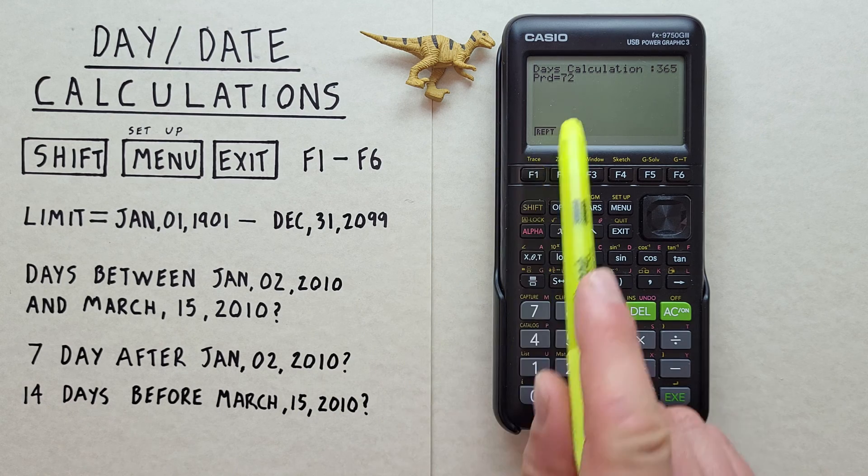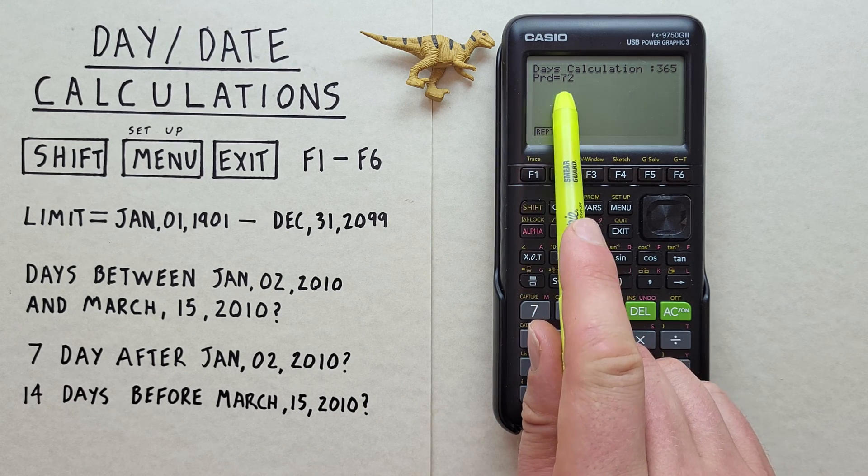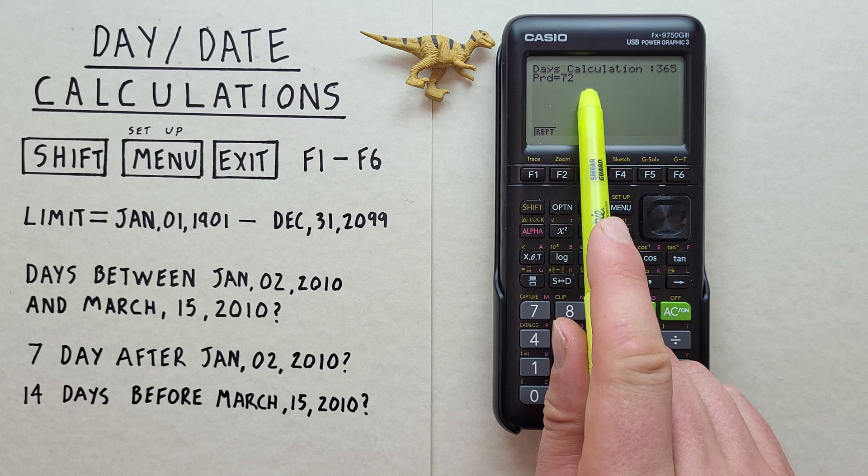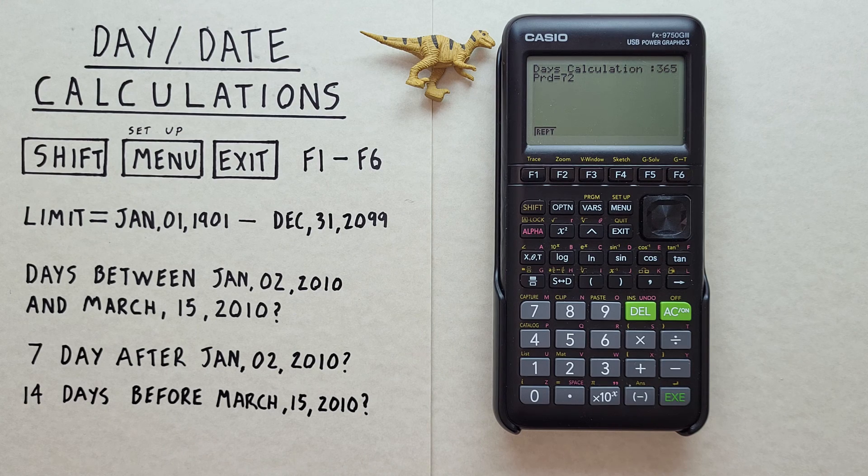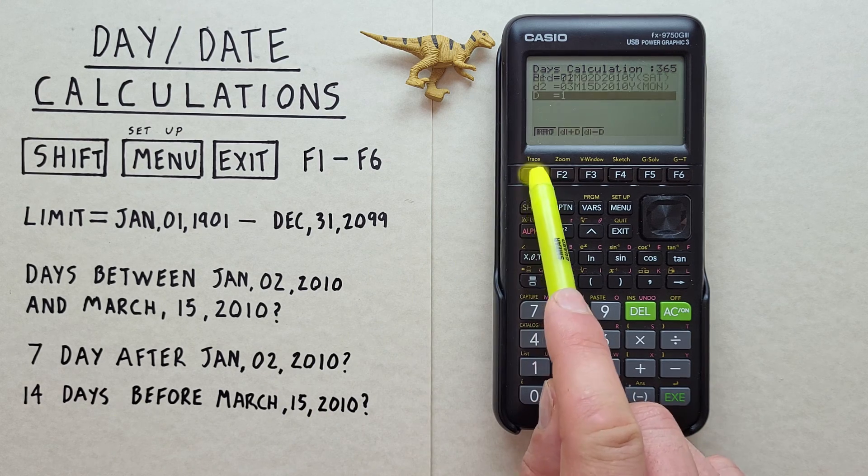There we go. This tells us there are 72 days between January 2 2010 and March 15 2010. So that's how long we have to get our project done. To go back, we can hit F1 again.